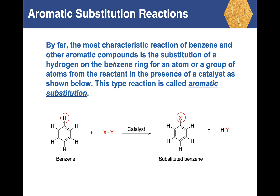As a quick review, the reactions of benzene are called aromatic substitution reactions. The keyword is substitution — basically taking one of the hydrogens and substituting an atom or group of atoms from another reagent in its place to get a product. The hydrogen that's been replaced combines with the other portion of that molecule to get HY.